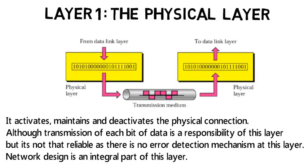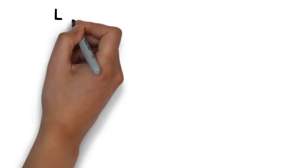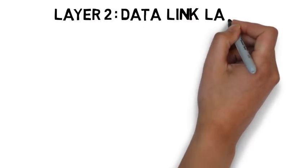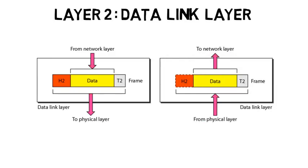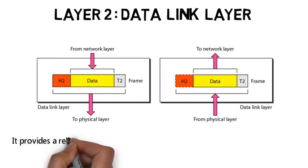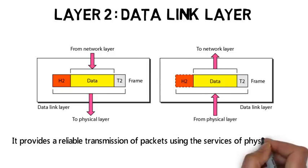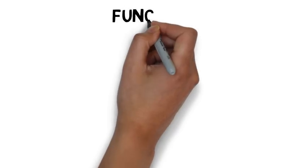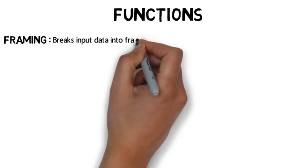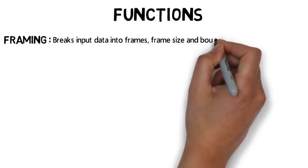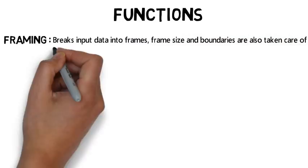Layer 2 is the Data Link Layer. It provides reliable transmission of packets using the services of the physical layer. Major functions are as follows: the first one is framing — it breaks the input data into frames, and frame sizes and boundaries are also taken care of by this layer.